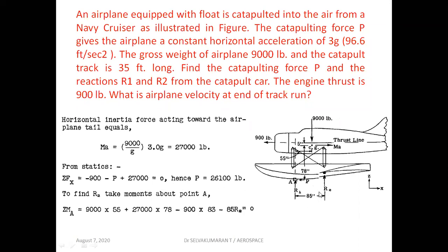To find R2, take the moment about point A (sigma MA = 0): 9,000 into 55 — the distance from A to the CG — is clockwise, so positive. 27,000 into 78 (inertia force) is clockwise, positive. 900 into 83 (that is 78 plus 5) is anticlockwise, negative. R2 into 85 is anticlockwise, negative. From this we can find R2.